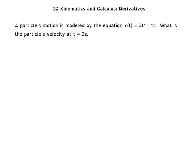We're going to see an example of this on the next slide. To add context to derivatives as they relate to 1D kinematics, here is a generic problem like one of the first you'd see in a college physics textbook. A particle's motion is modeled by the equation x(t) = 3t² − 4t. What is the particle's velocity at t = 3 seconds? To differentiate and take a derivative in this class, we are going to use a process called the power rule.